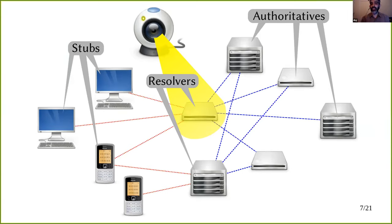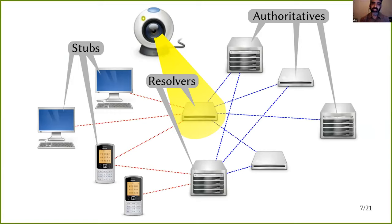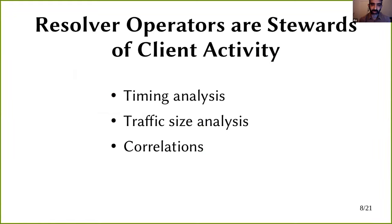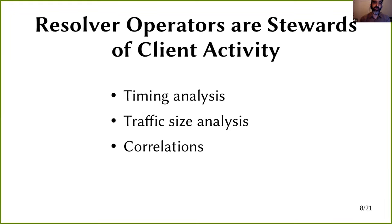A network monitor looking at traffic from a specific resolver network can see queries coming in from stubs and queries going out to authoritatives. The key takeaway is that the resolver acts as a steward of the client's activity—the previous talk called it 'aggregated interests of clients.' In some cases, those interests are very narrow: a resolver might only have one or two stubs making a specific query. An attacker with this capability can do timing analysis, size analysis, and other correlations—similar to what the Tor project tries to minimize—revealing quite a bit of information about user behavior.